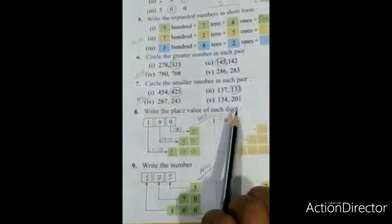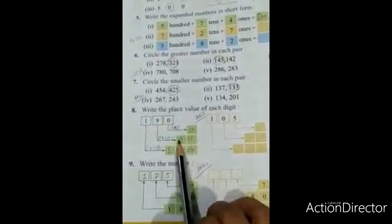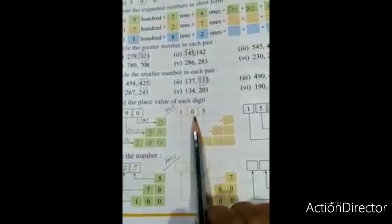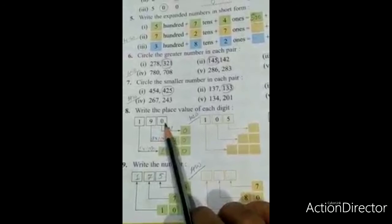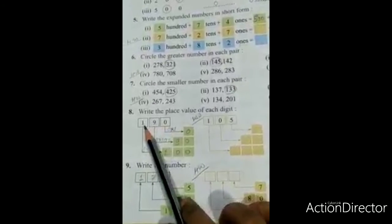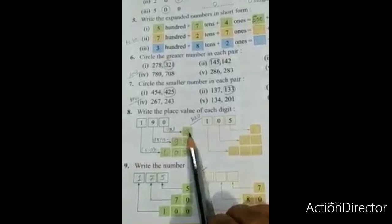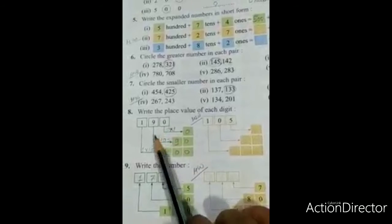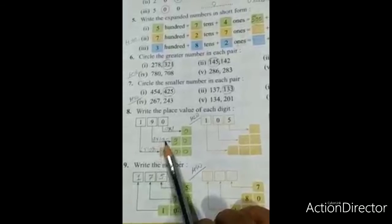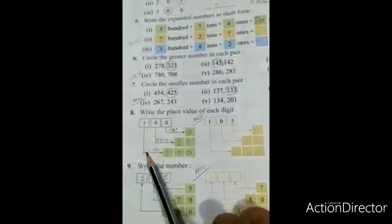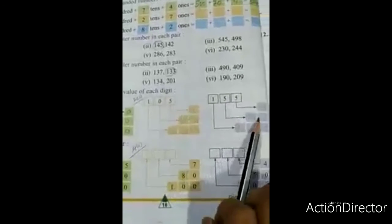Next: Write the place value of each digit. Here the number is 190. Place value of zero in the ones place: ones place is zero multiplied by one, that means zero. Tens place is 9: 9 multiplied by 10, nine tens are 90. Hundreds place is 1 multiplied by 100, which equals 100. This one you will do yourself.